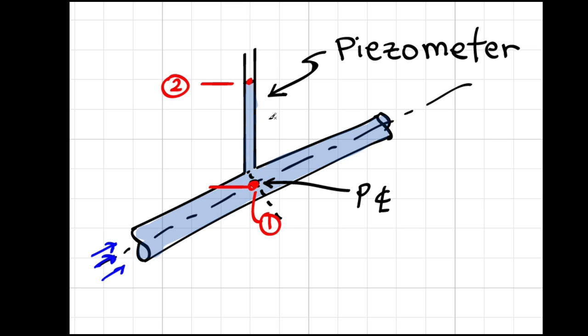The liquid in here has the same density, so I'll write the change in pressure equals the specific weight times the elevation change, which in this case is h, where h is the elevation difference between point one and point two.